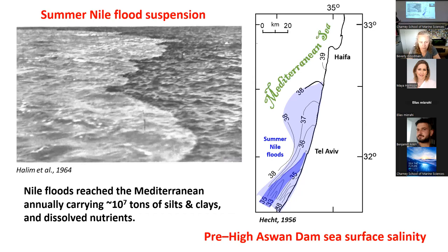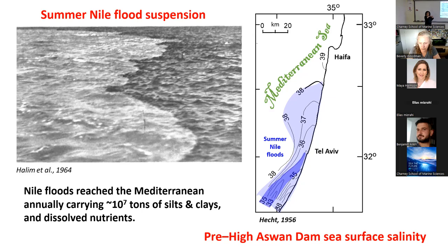Another important phenomenon to understand the record: in the past, before the Nile River was dammed by the Aswan Dam in the 1960s, Nile floods reached the Mediterranean annually, carrying huge amounts of sediments. This is an image from the 1960s showing these flood plumes entering the Mediterranean — relatively fresh water floating on the seawater.